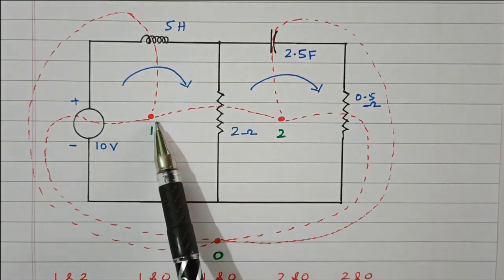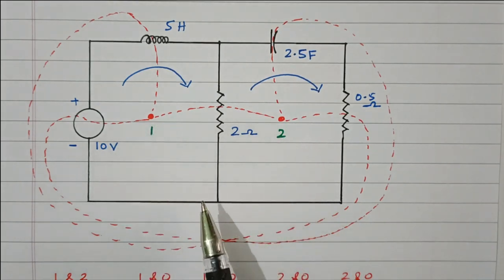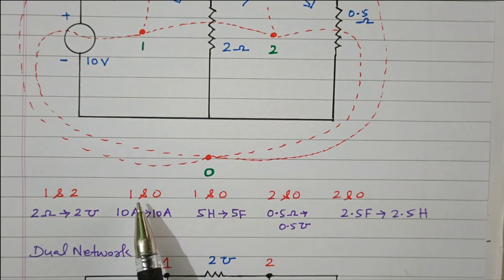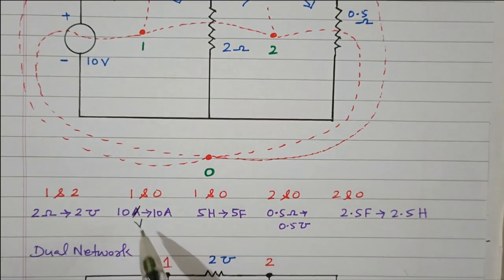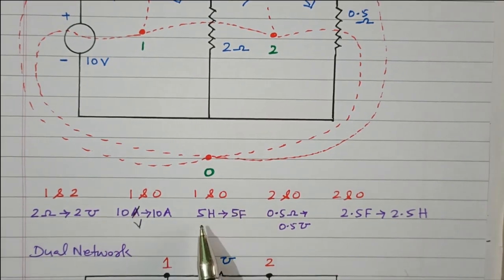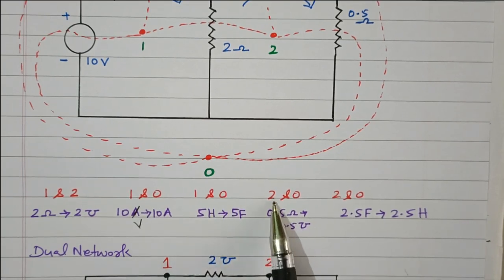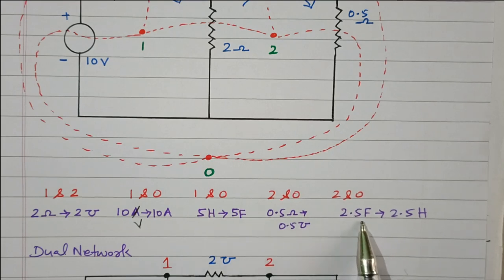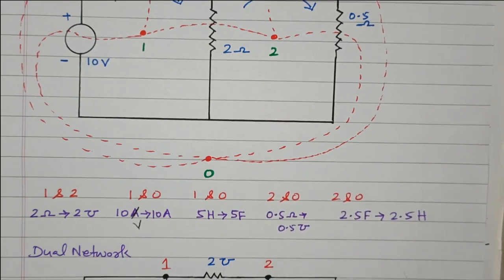Now all the dots are connected and all elements are converted. To summarize the conversions: between 1 and 2, the 2 ohm resistor is converted into 2 mho conductance. Between 1 and 0, the 10 volt voltage source is converted into a 10 ampere current source, and the 5 Henry inductance is converted into 5 Farad capacitance. Between 2 and 0, the 0.5 ohm resistor is converted into 0.5 mho conductance, and the 2.5 Farad capacitor is converted into 2.5 Henry inductance.